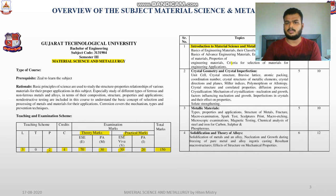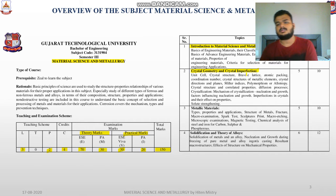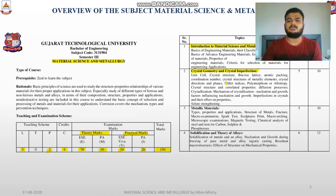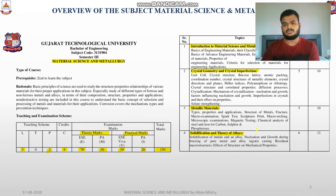The first chapter is Introduction to Material Science and Metrology, where we study various kinds of materials, their basic fields, importance, and characteristics. The second chapter is Crystal Geometry and Crystal Imperfection, which deals with the internal structure of a metal — how material is made, what are the basic crystal structures, crystal lattices, and how materials are formed. The third chapter covers Metallic Materials, where various examinations and testing of different metallic materials are carried out.